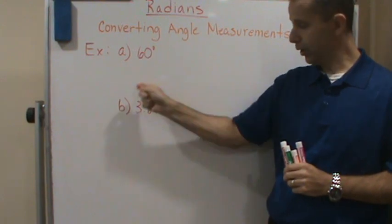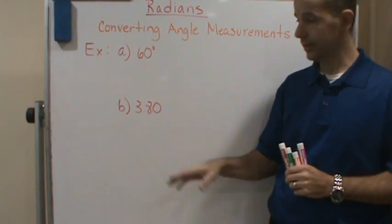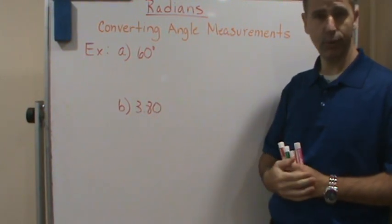Radians. How do we know it's radians? There's no units, and these are measurements of angles that we're talking about.